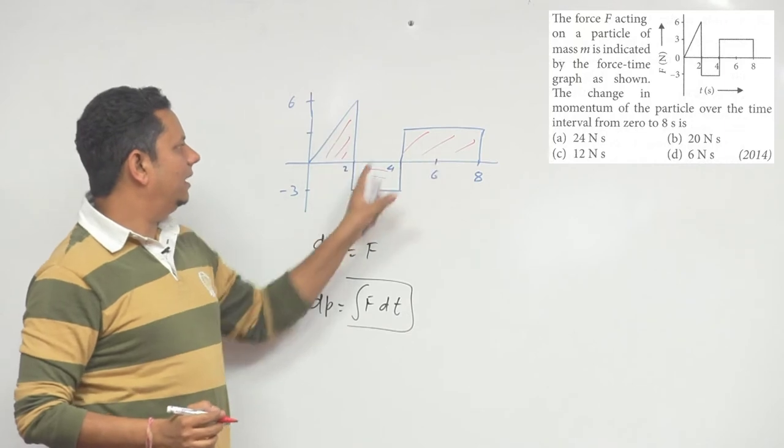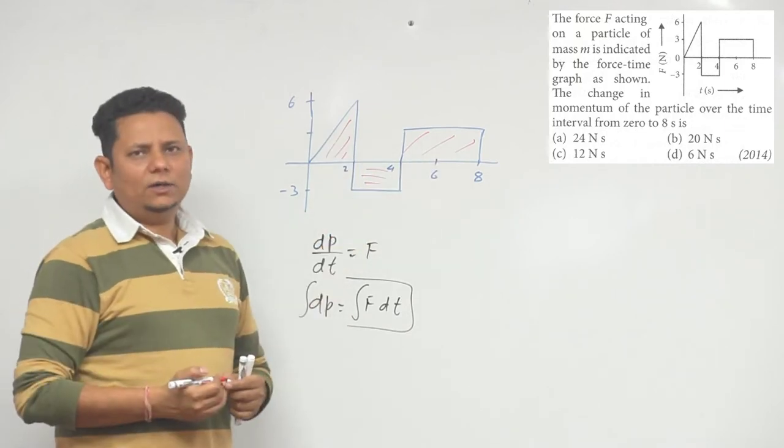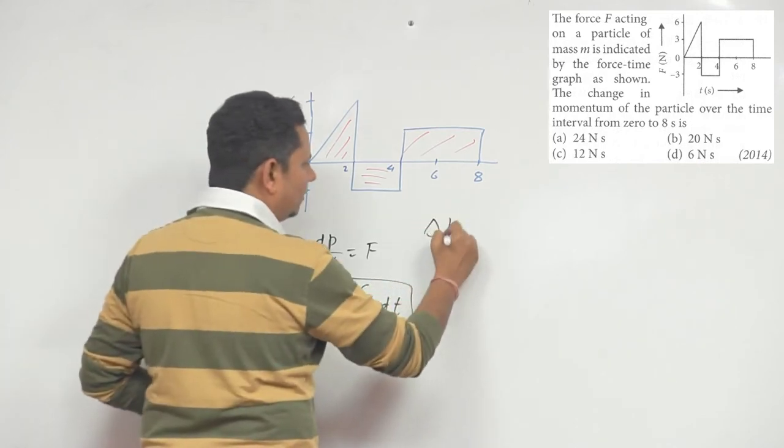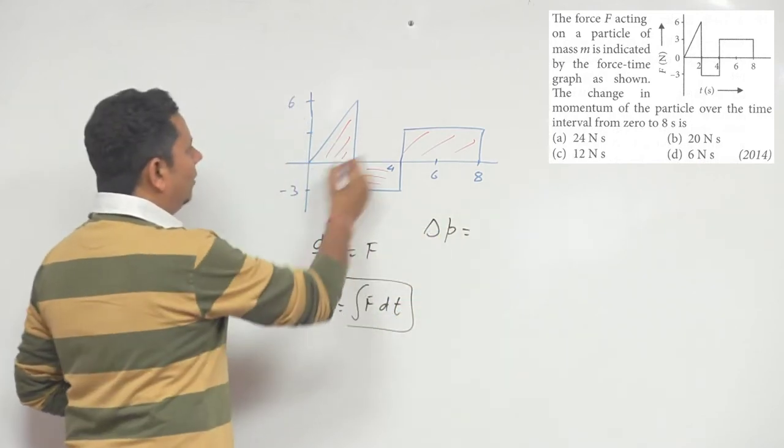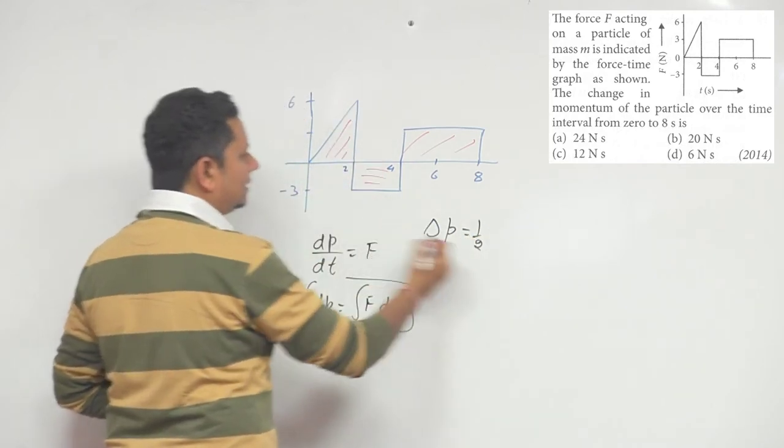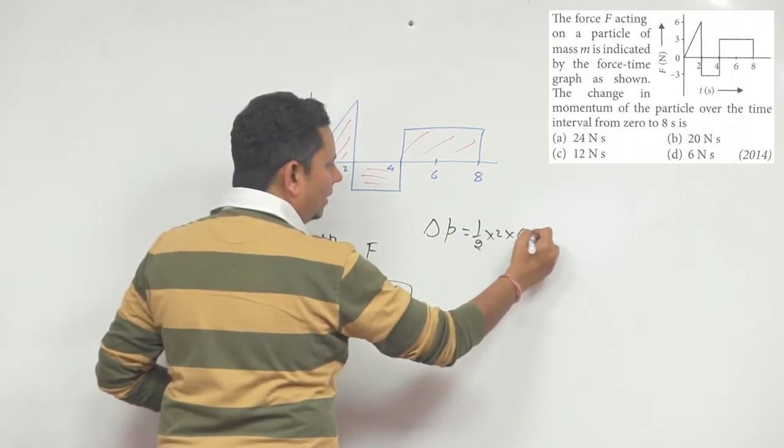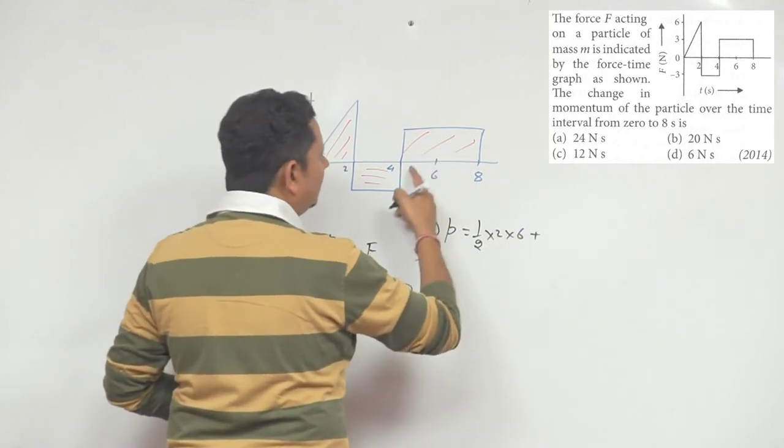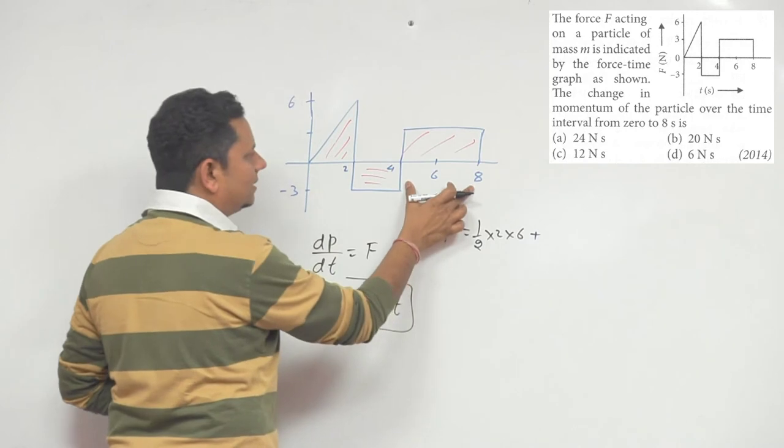So this is the result - change in momentum will be the area. Area of a triangle is half multiplied by this side multiplied by this side, so multiplied by 2 multiplied by 6. This becomes plus the area of this rectangle. This is 4, 8 minus 4 is 4, and this is 3, multiplied by 3.